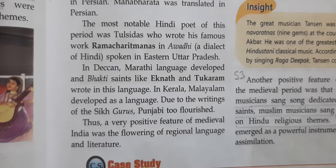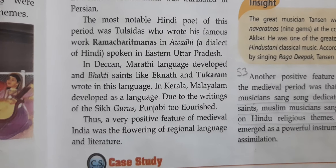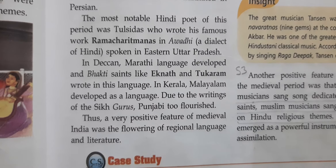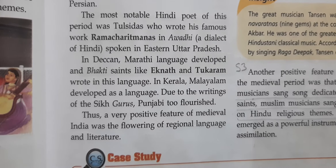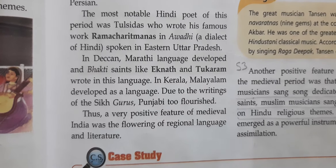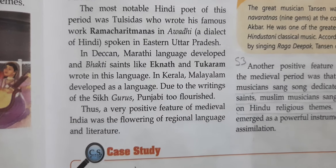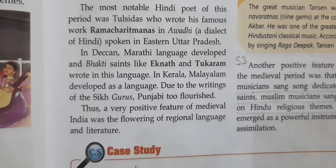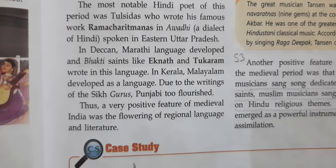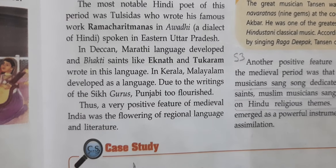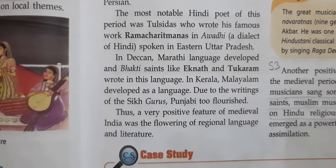The most notable Hindi poet of this period was Tulsidas, who wrote his famous work Ramcharit Manas in Avadhi, spoken in Eastern Uttar Pradesh. In the Deccan, the Marathi language developed and bhakti saints like Eknath and Tukaram wrote in this language. In Kerala, Malayalam developed as a language, and due to the writings of the Sikh Gurus, Punjabi also flourished in this period.